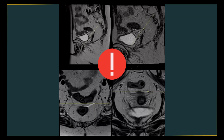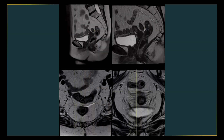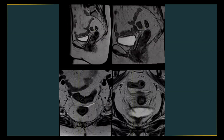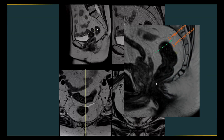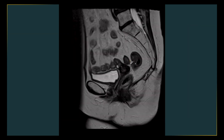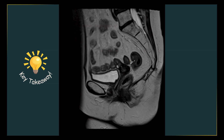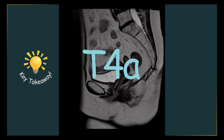Peritoneal reflection is important for several reasons. One of them is that it separates the intraperitoneal part of the rectum from the extraperitoneal part. The small part of the rectum above the peritoneal reflection is the intraperitoneal part and the part below is the extraperitoneal part. Tumors that involve the intraperitoneal part more easily and quickly infiltrate into the peritoneum directly through this peritoneal reflection, and that is why involvement of the peritoneal reflection makes the disease T4A.